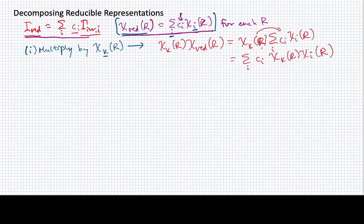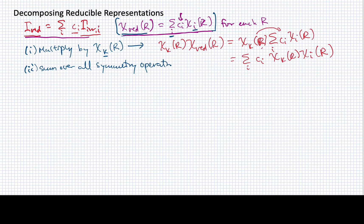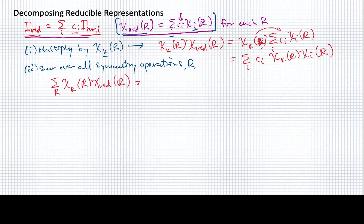The second step is to sum over all the symmetry operations, denoted by the letter r. So now I'm summing over r of the product of chi sub k of r and the reducible representation, and that's going to be equal to the sum over r, sum over i, of c sub i times chi sub k of r times chi sub i of r.